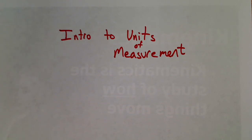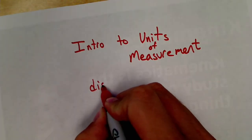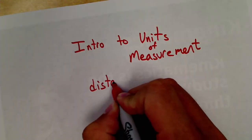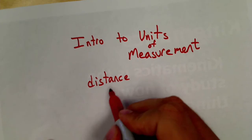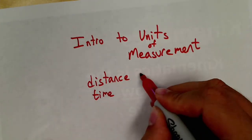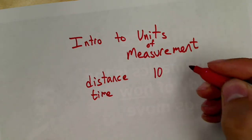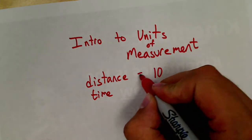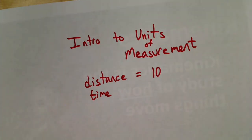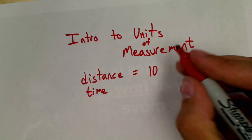Hello physics students, this is Mr. Downing. Let's do a quick introduction to units of measurement. Every kind of measurement, whether it's measuring a distance or a time, we don't just have a distance of 10. We can't say my distance is 10 — that doesn't mean anything. We have to attach a unit to it.